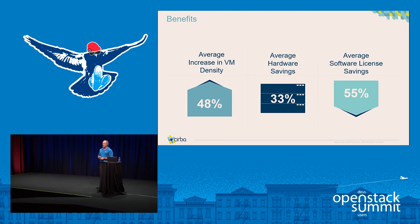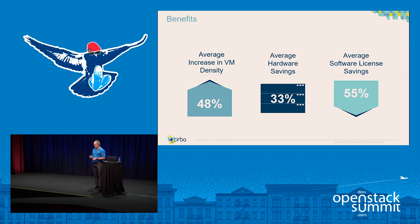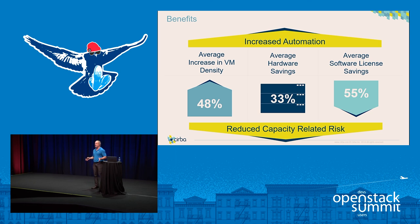The benefits — why are customers doing this? Supply optimization typically yields around a 48% increase in density, which relates to a hardware savings of around 33%, and software license savings from intelligent workload placement of around 55%. There are also soft benefits: reduced capacity risk and the ability to increase automation in your private cloud.